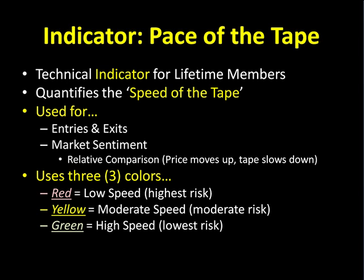As you guys know, we use multiple time frames. We use things like momentum and volume, price action, and the pace of the tape indicator to give us some idea of what the overall market sentiment is. We use a term called relative comparison — we're going to watch this indicator, the pace of the tape. A good example is we look for divergence, where we have price moving up and the tape slows down.